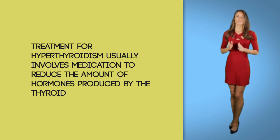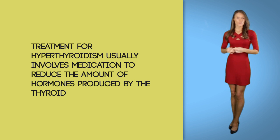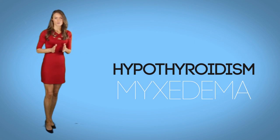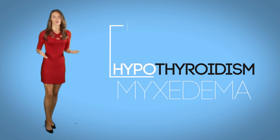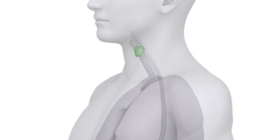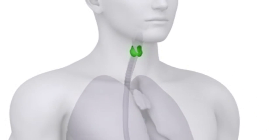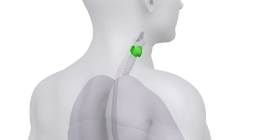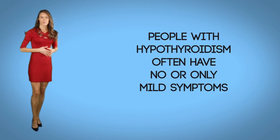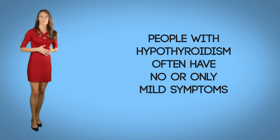Hypothyroidism, also called myxedema — remember, 'hypo' in front of a word means not enough of, or a low amount. Hypothyroidism is a thyroid disorder that occurs when the thyroid does not produce enough hormones, which is the opposite of hyperthyroidism. People with hypothyroidism often have no or only mild symptoms.